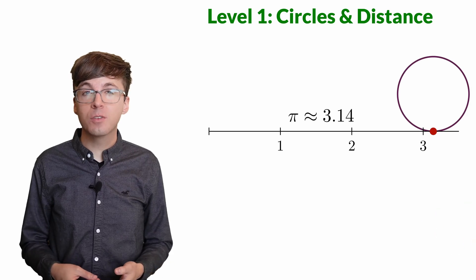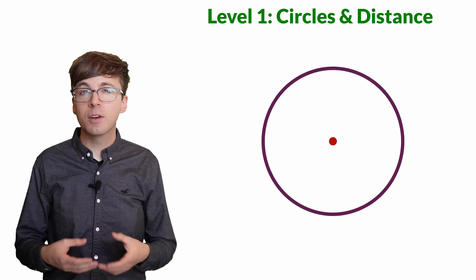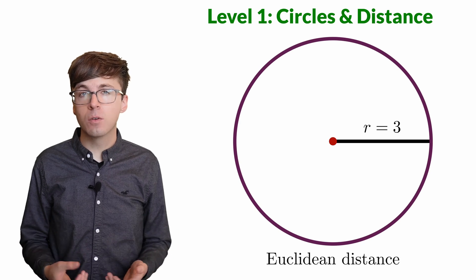One common situation where circles appear is when we measure distance. If we start at a point and look at all the points which are a distance three away along a straight line, we get this circle.